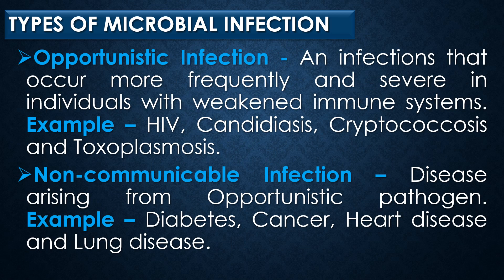Next is opportunistic infection. An infection that occurs more frequently and more severely in individuals with a weakened immune system is called opportunistic infection. Examples include HIV infection, candidiasis, cryptococcus, and toxoplasmosis.